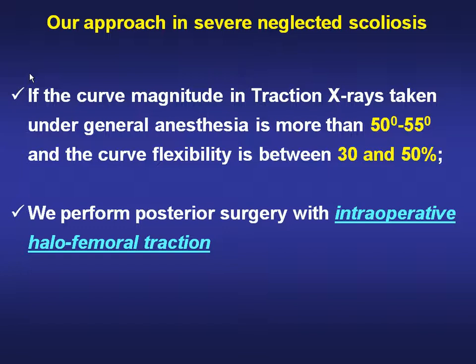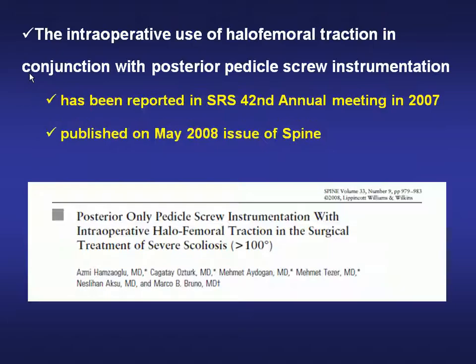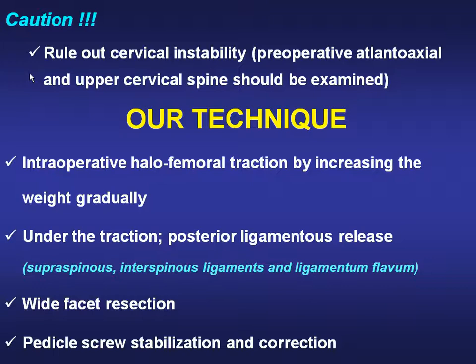If the curve magnitude on traction x-ray under general anesthesia is more than 50 to 55 degrees and curve flexibility is 30 to 50%, we perform posterior surgery with intraoperative halo-femoral traction. We started using intraoperative halo-femoral traction in neglected adolescent idiopathic scoliosis in 1999. You should rule out cervical instability.